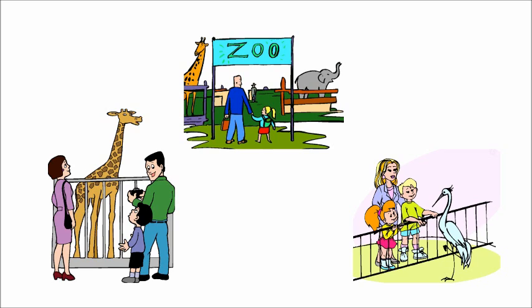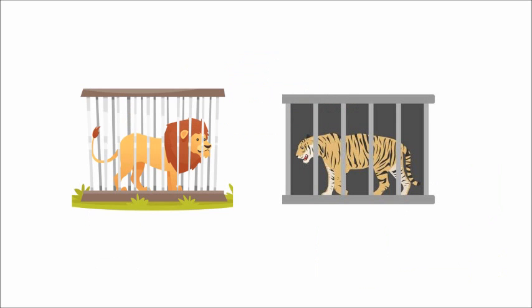The next word is zoo. There are some wild animals in the zoo. I like to visit a zoo. The children enjoy watching the animals in the zoo. You can see the animals are kept in a cage because they can harm us. So the word is dangerous. These animals can be dangerous.